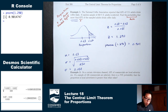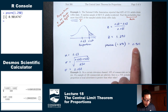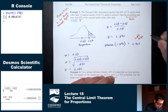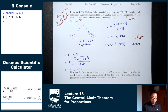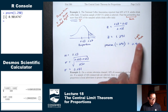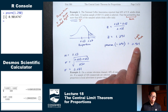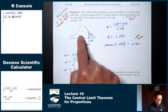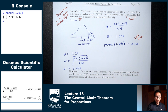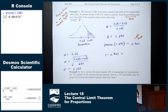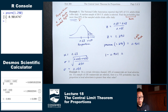We're not looking for a left area — we're looking for the area to the right. So do 1 minus the left area: 1 − 0.901 = 0.099. That is our final answer.